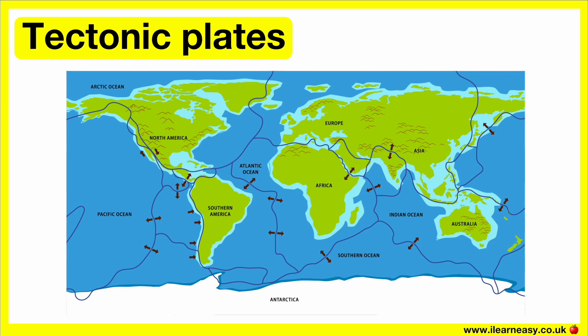Tectonic plates are large pieces of rock that divide the earth's crust. These continental and oceanic crusts move constantly to reshape the earth's landscape. The earth's outermost layer, also known as the lithosphere, is made up of the crust and the upper mantle. The plate tectonics theory states that this outermost layer is broken into large rocky plates.